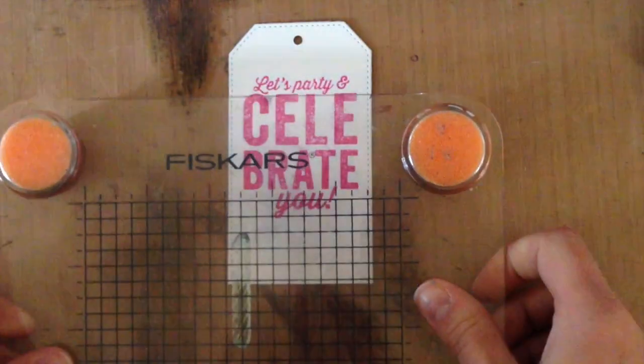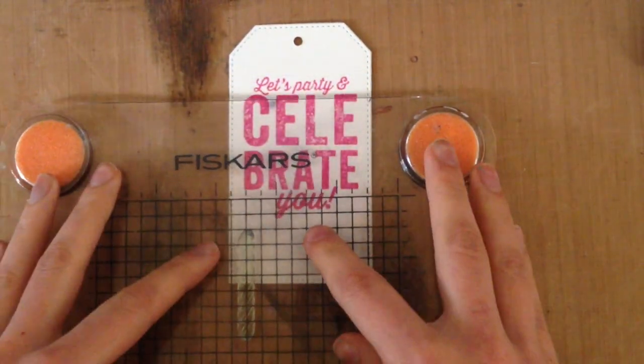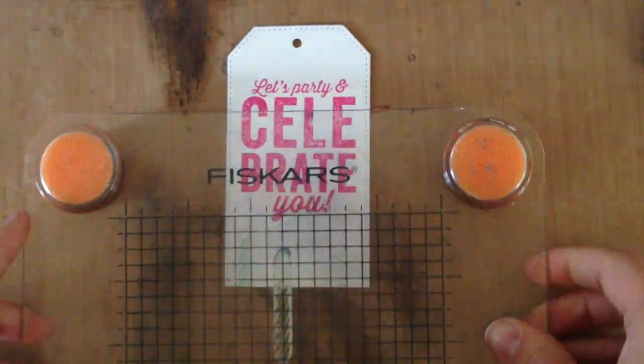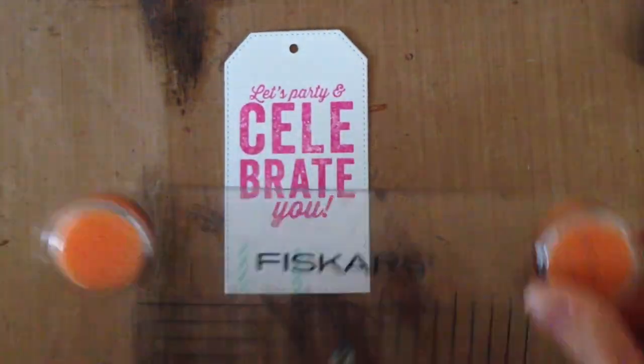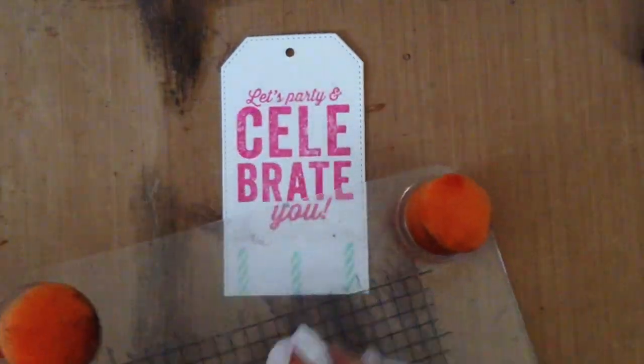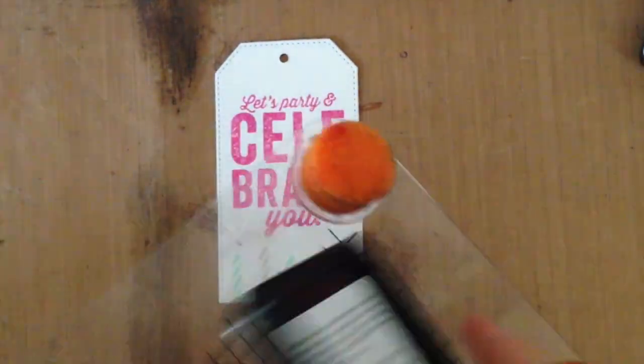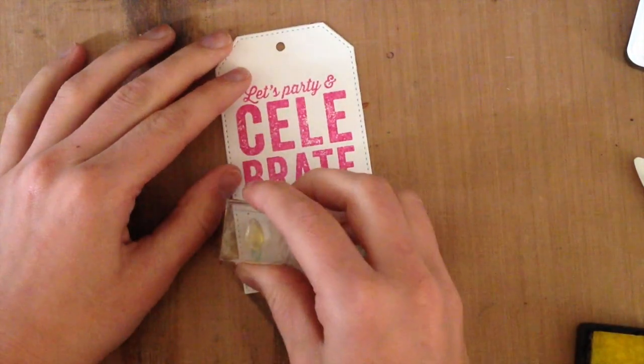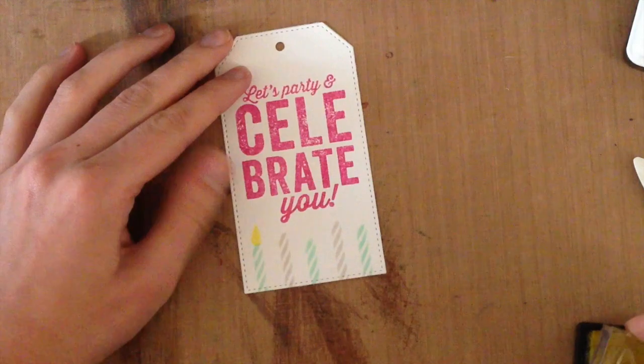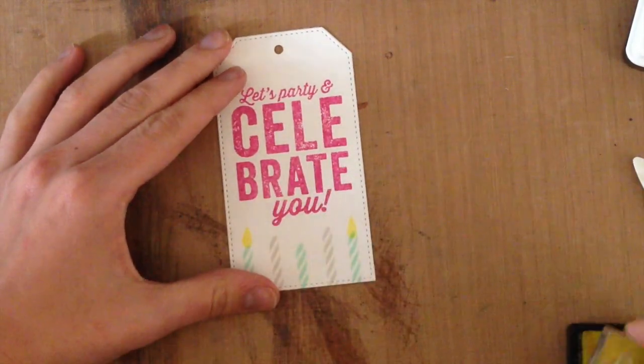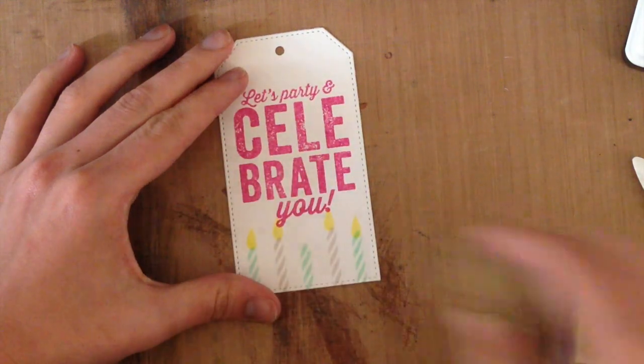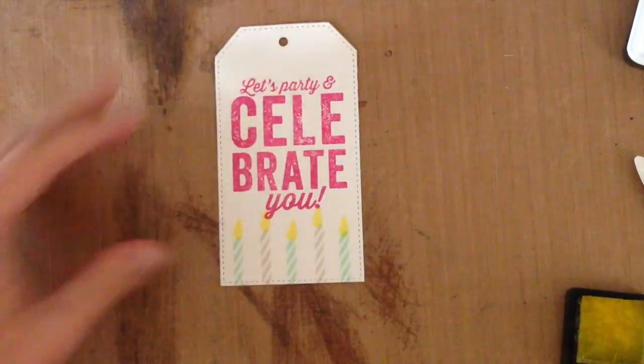I decided to stamp one more thing on the bottom here and I decided to do a border of candles. I stamped these in mint ink and I had done three in the mint, two on the sides and one in the middle. Then I went in again and stamped using the fog gray in the middle. And then using some distress ink, this is the squeezed lemonade, and I went in and did the candles flames as well.